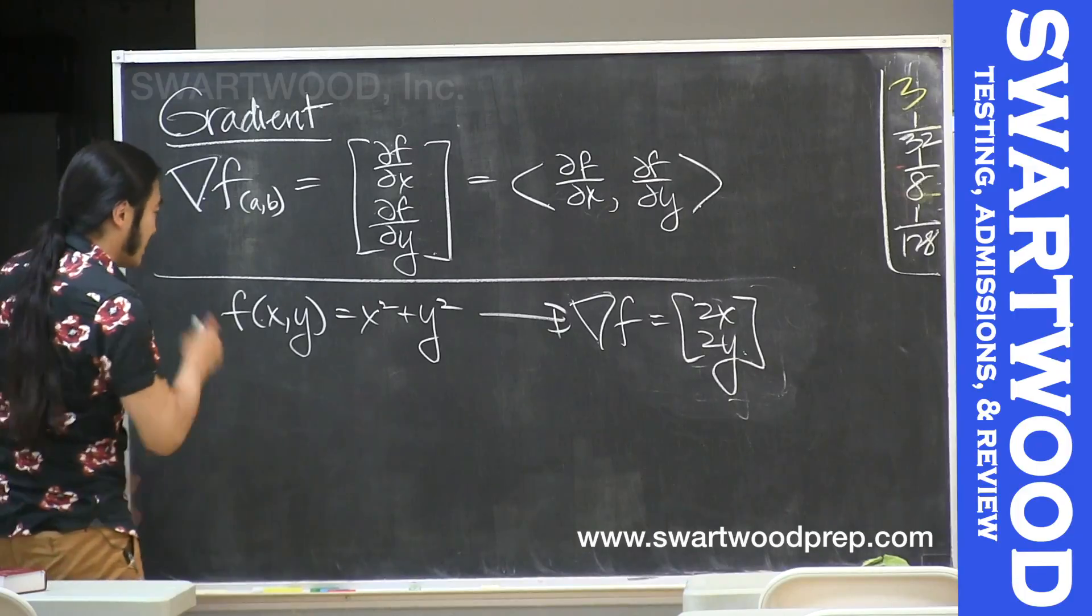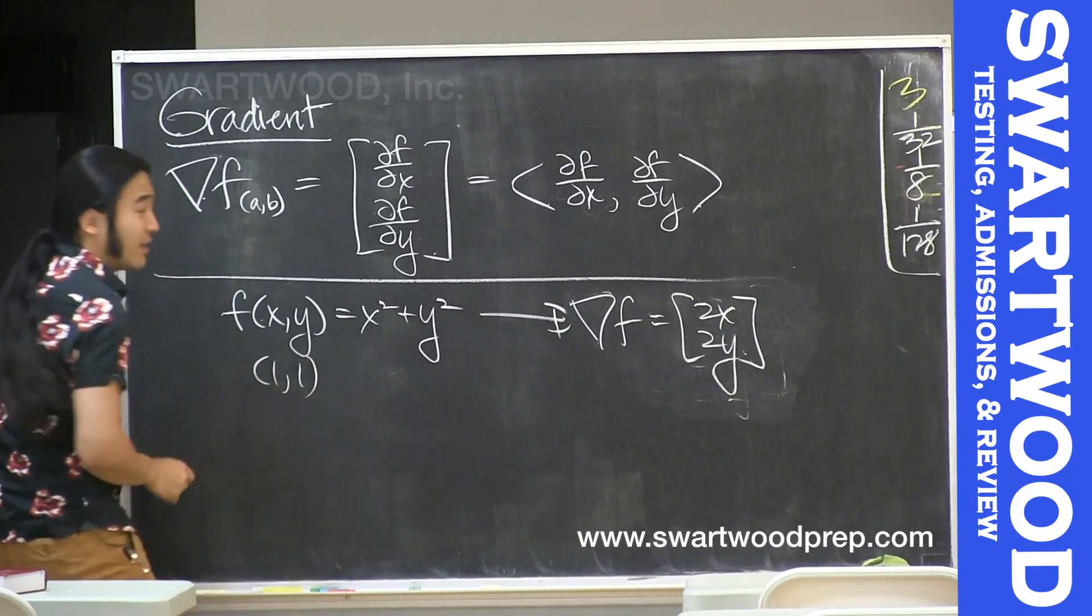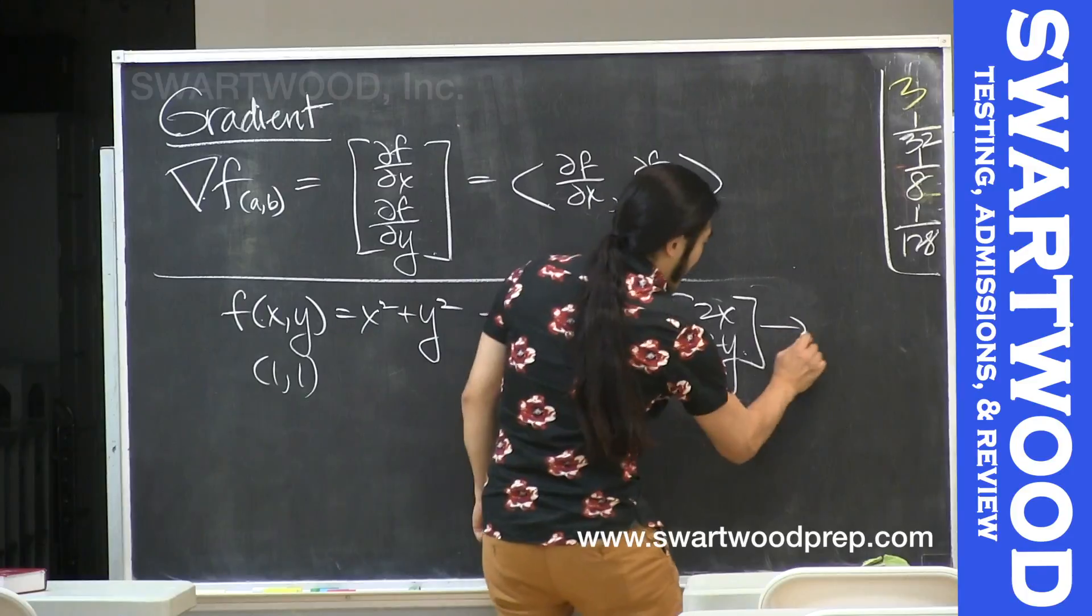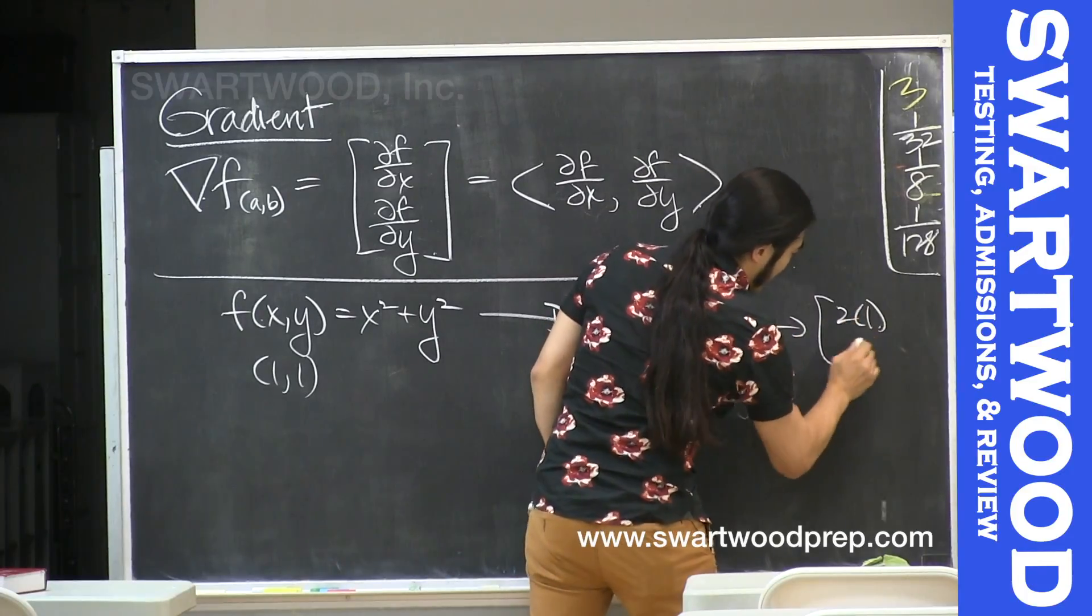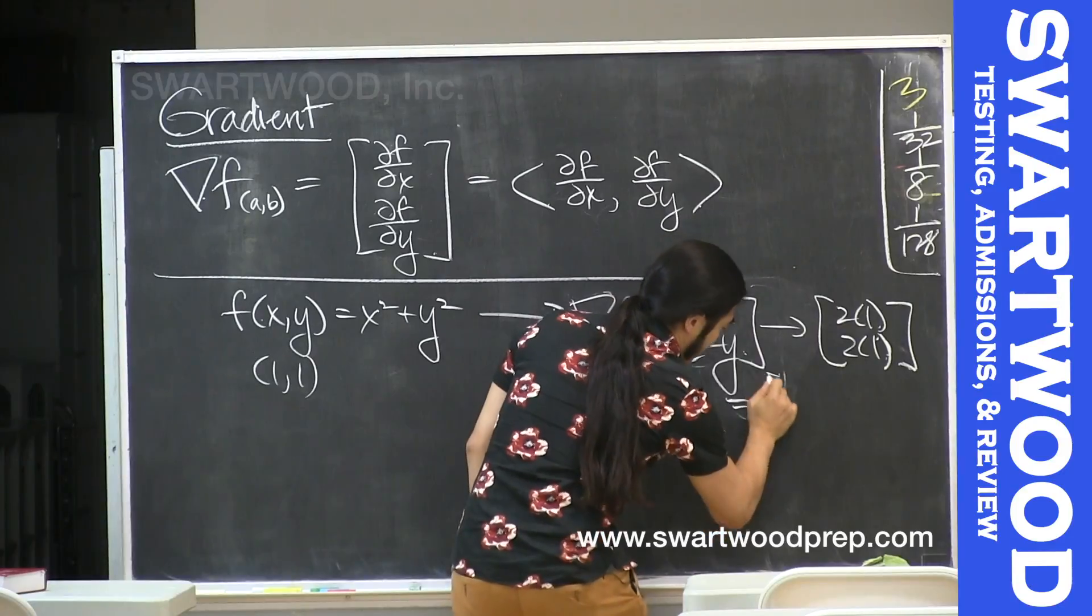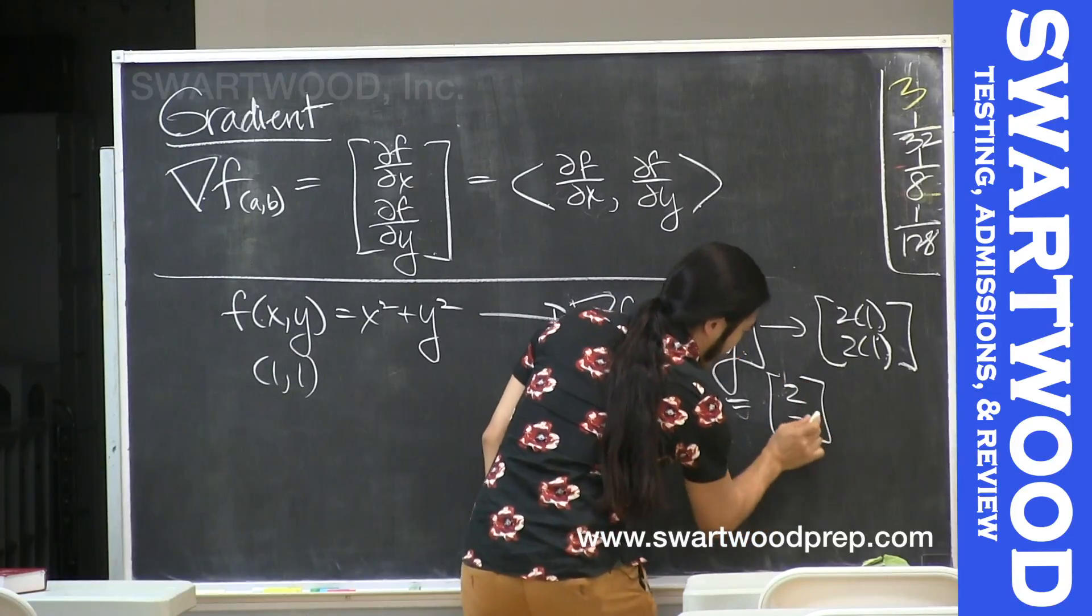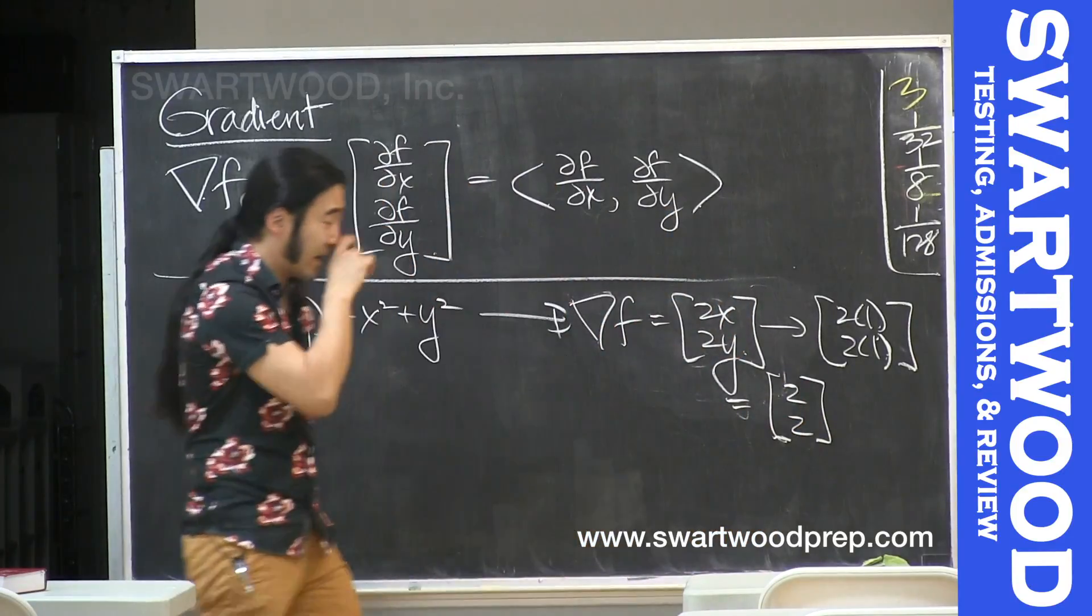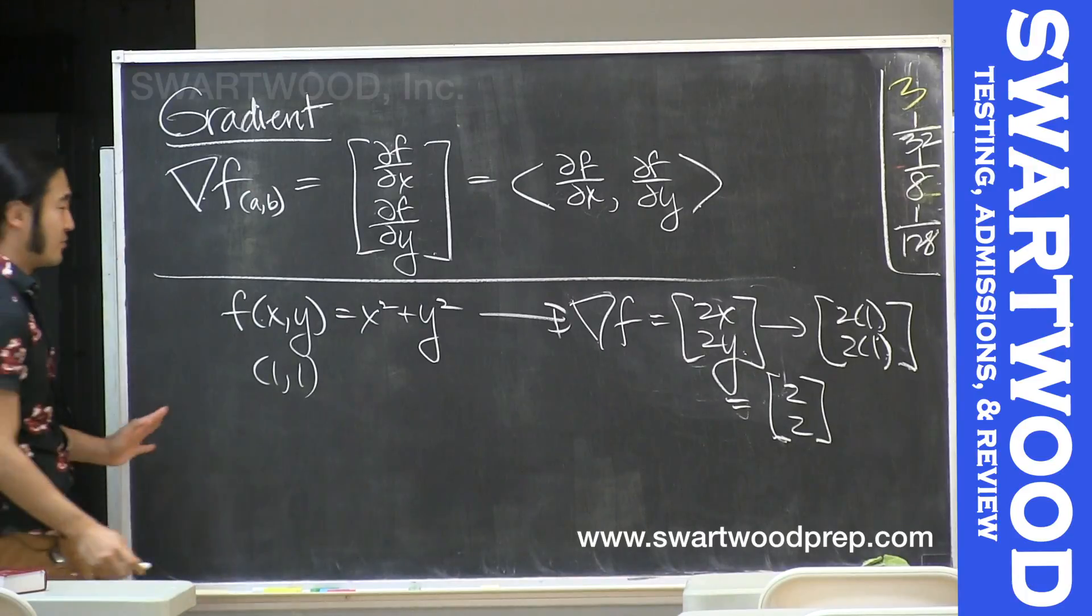But now to evaluate it at a point, let's pick the point, say, (1,1). I'd literally have to go into here and plug in 1 and 1. So in this case, the gradient at (1,1) is (2,2). No big deal.